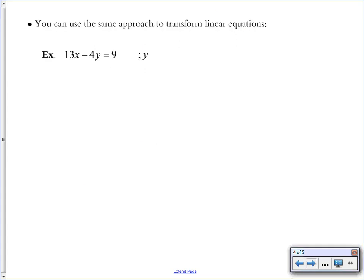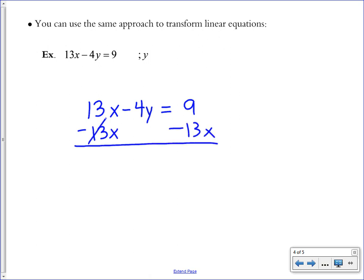You can use the same approach to transform linear equations, and this is going to be very helpful when we get into graphing linear equations, learning how to get y by itself. So to get y by itself in this linear equation, it means we need to move everything that's currently on the left side of the equation with y to the other side. I'm going to start by moving the entire x term, which is 13x. It's not attached to the y, so I can just subtract them away to move them to the other side, which means they're gone from the left side of the equation, 13x minus 13x would be 0.